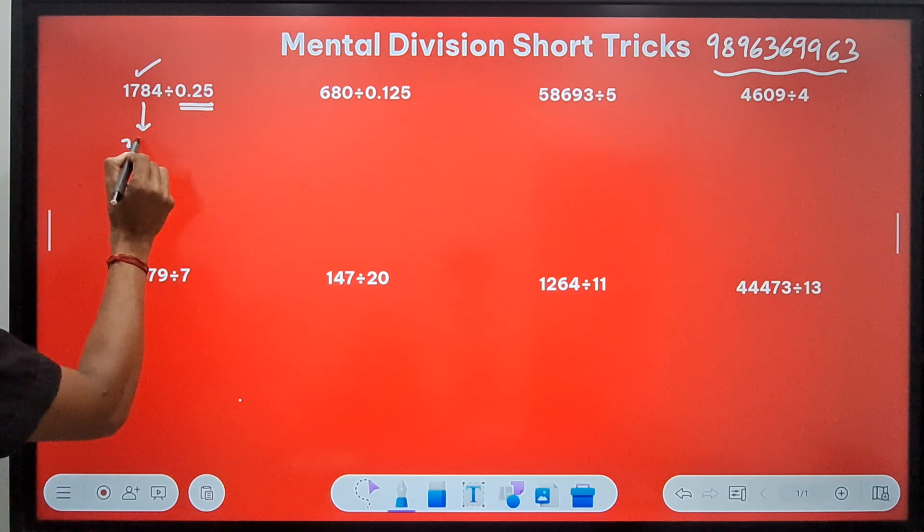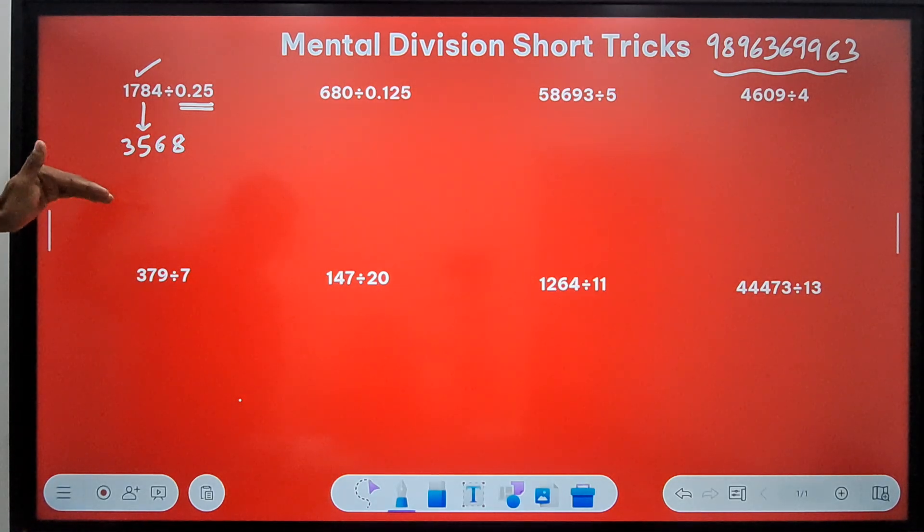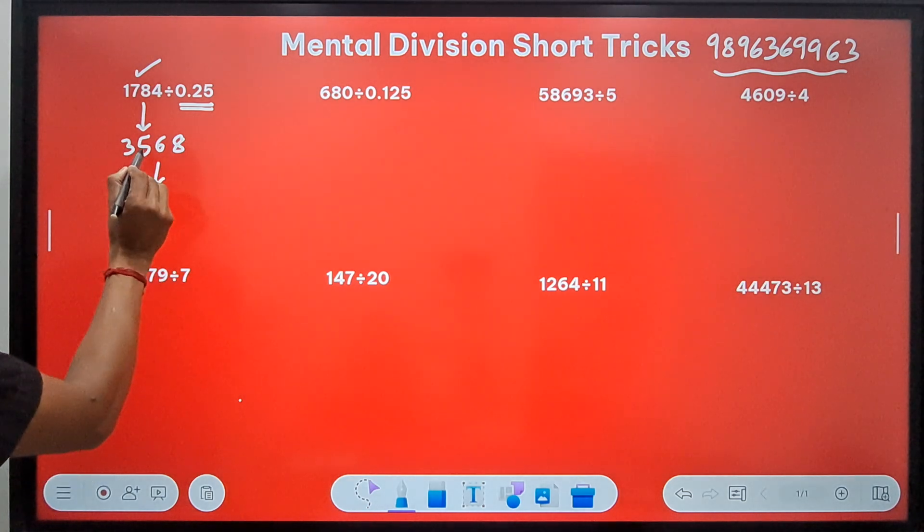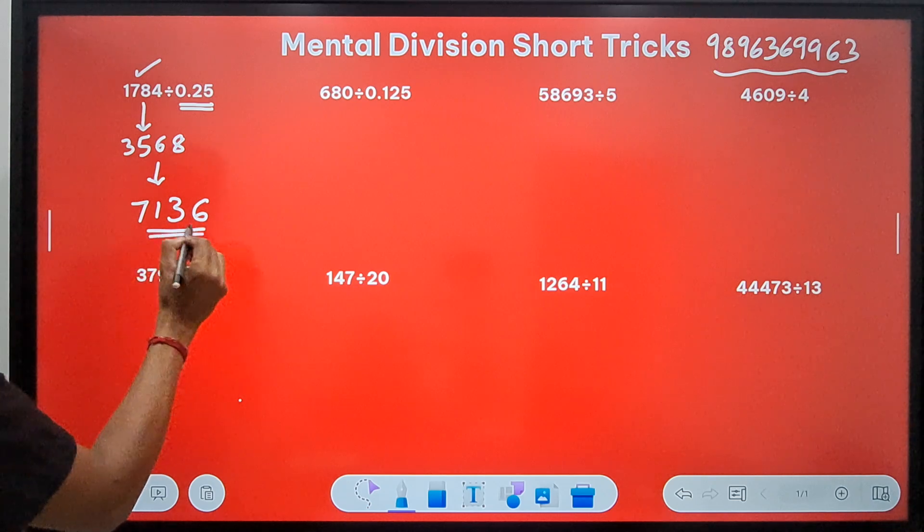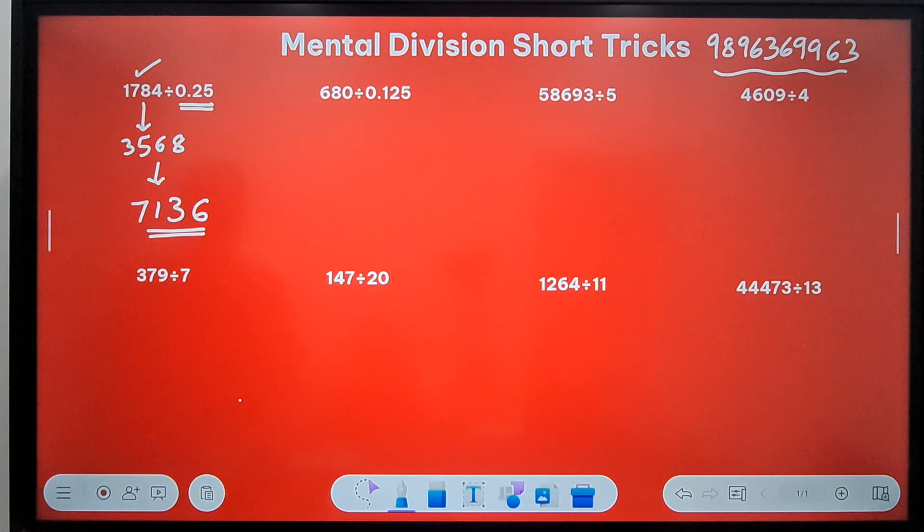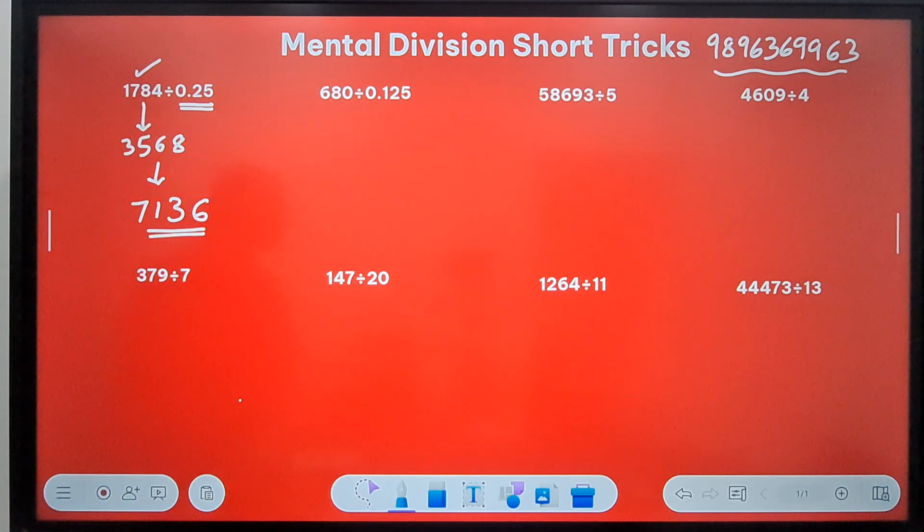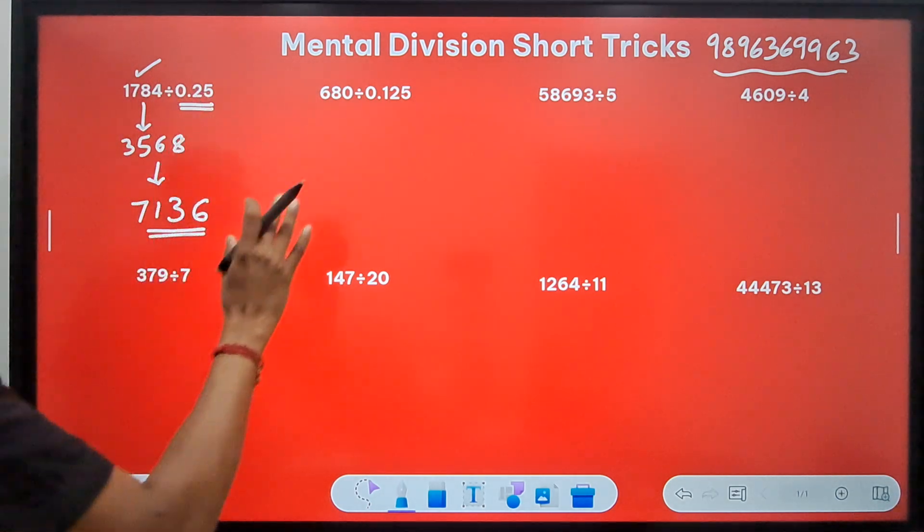If you add these doubles, you get 3568, which is the double of 1784—the division of this number by 0.5. Double this again: 35 becomes 70 and 68 becomes 136, so 70 and 136 gives 7136. So 1784 divided by 0.25 gives you the double of double, which is 7136.